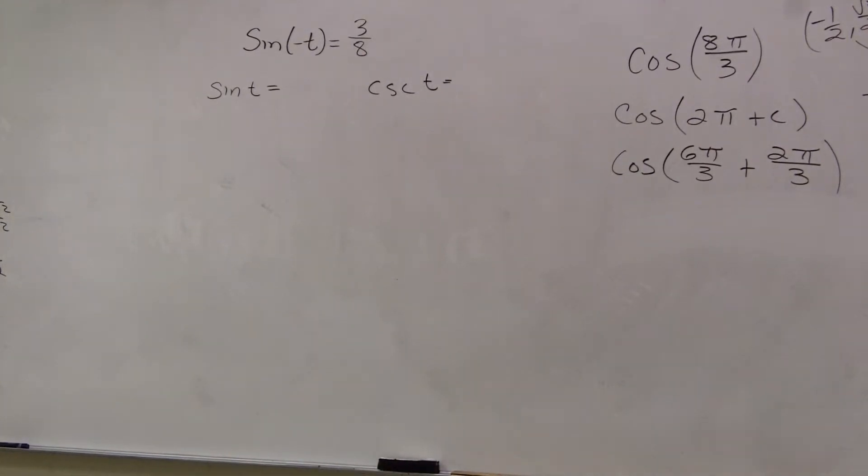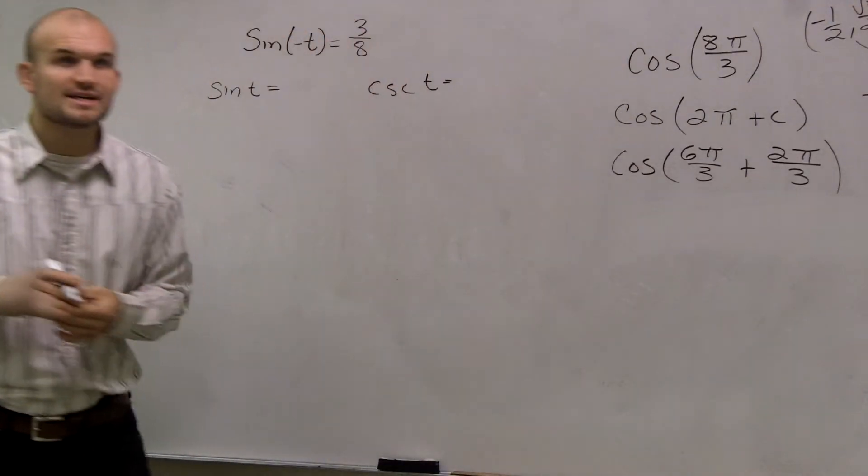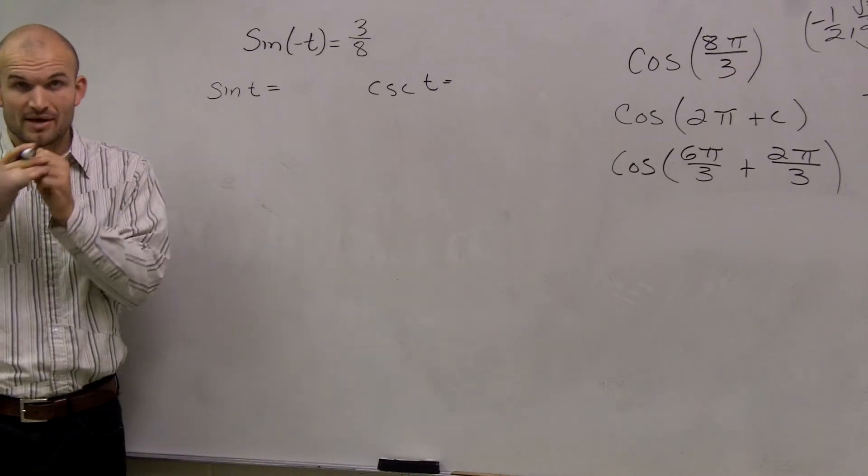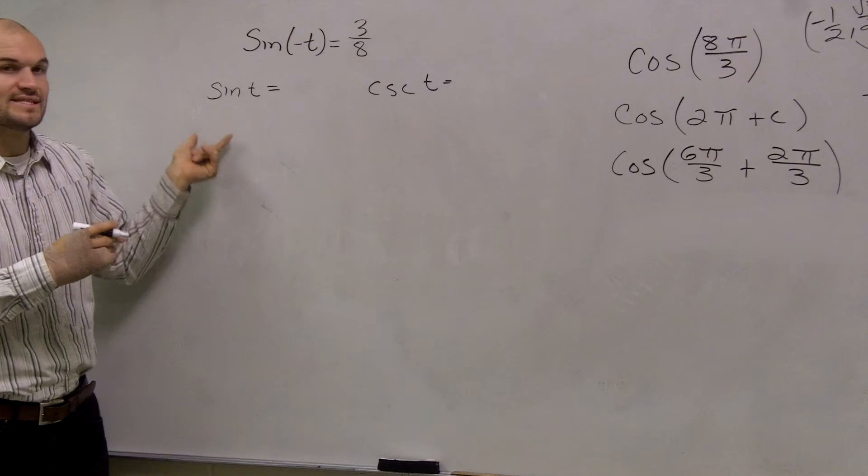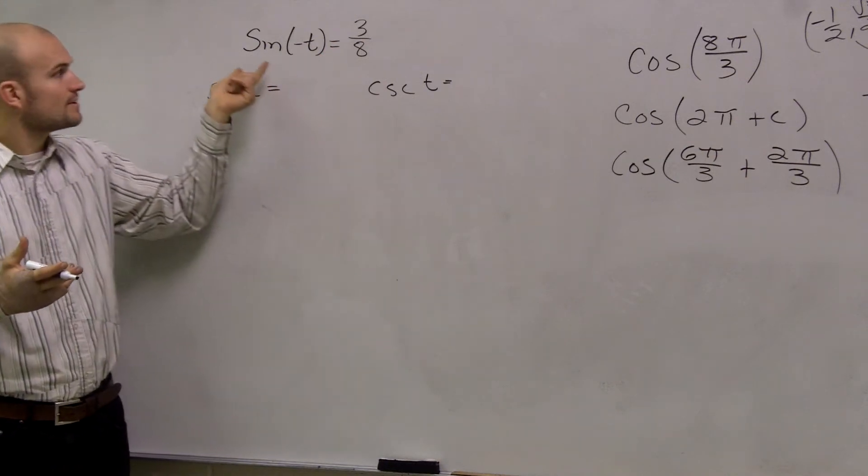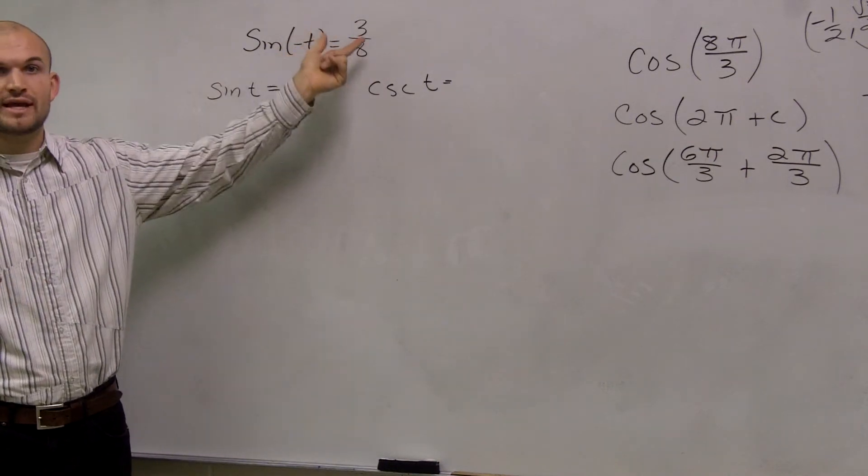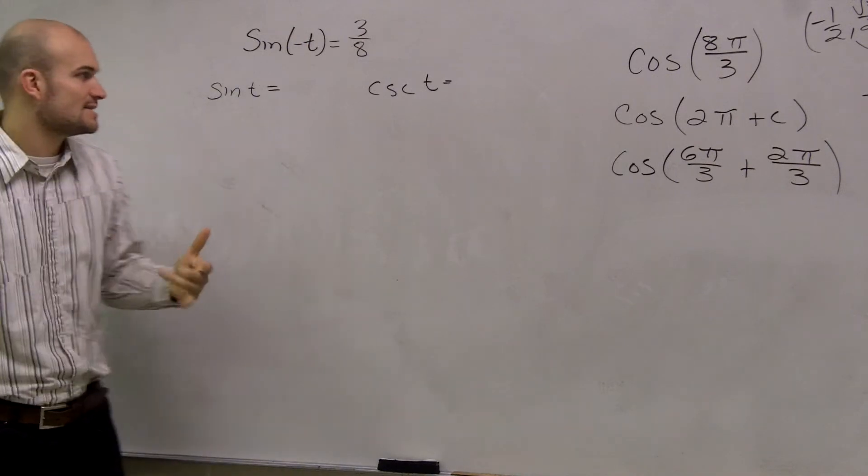All right, so a couple things you guys need to know about this, Courtney. When you have sine of negative t equals 3/8ths, and they say, what is actually sine of t? So if the sine of negative t equals 3/8ths, we need to know what does our even and odd trigonometric identity say?